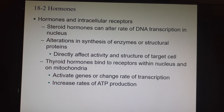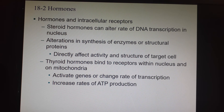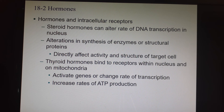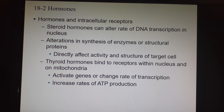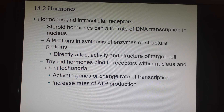We're continuing in chapter 18 and picking up with slide 33. We had just finished talking about extracellular receptors — amino acid derivatives and peptide-based hormones that can't actually enter the cell. So their receptors were on the outside, and then they activated a G-protein second messenger system.